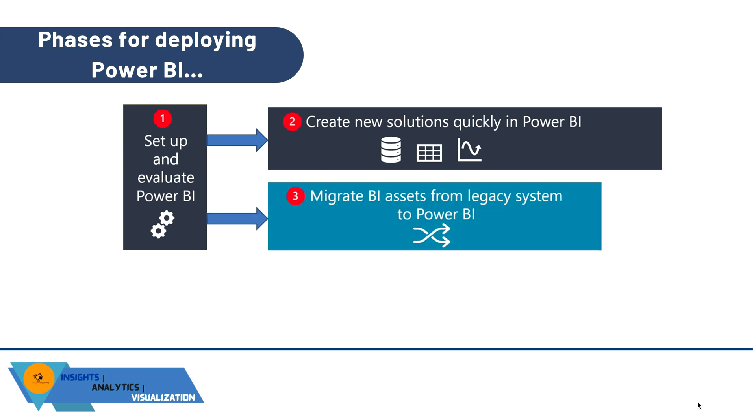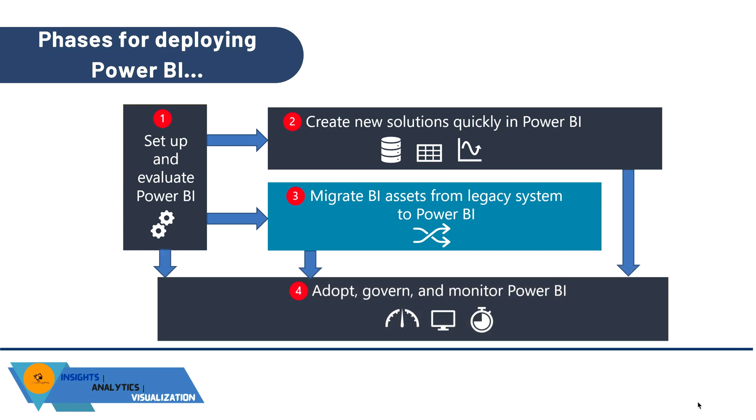Phase 3 is to migrate BI assets from the legacy platform to Power BI — this is the focus of the whole series. Phase 4, the final phase, is to adapt, govern, and monitor Power BI. Once migrated, you need to adopt a Power BI culture in your organization. This phase comprises ongoing activities such as nurturing a data culture, communication, and training, all of which greatly impact effective Power BI implementation.